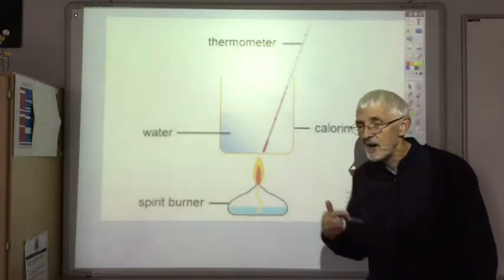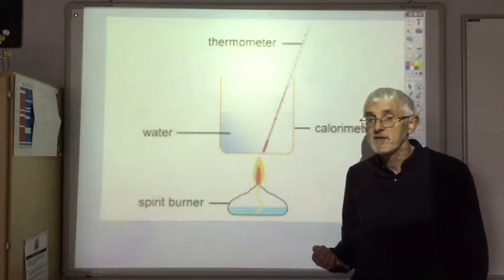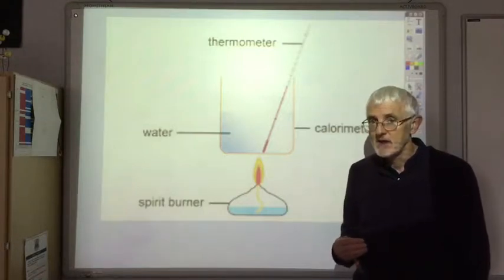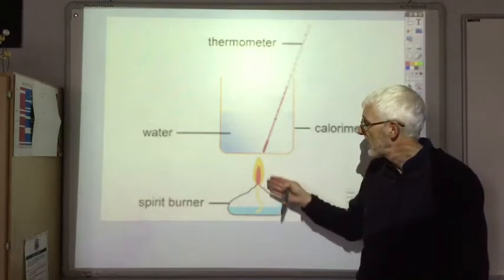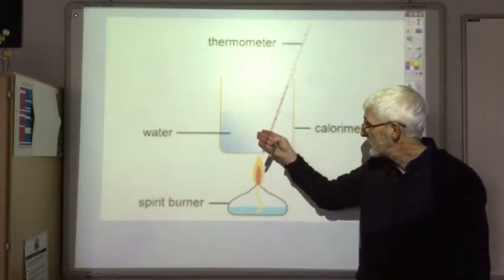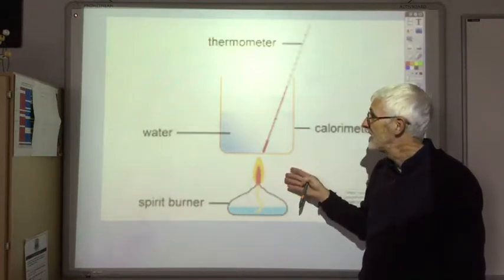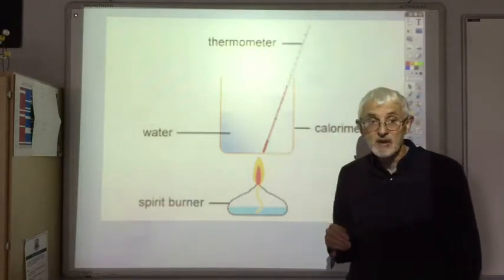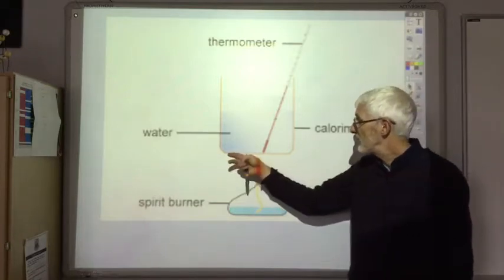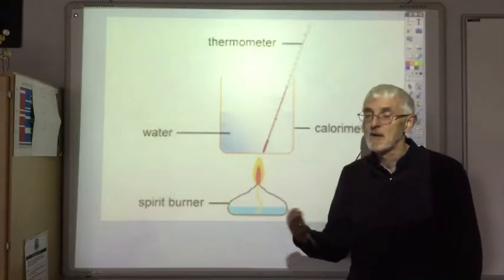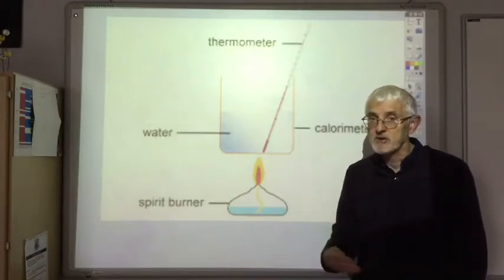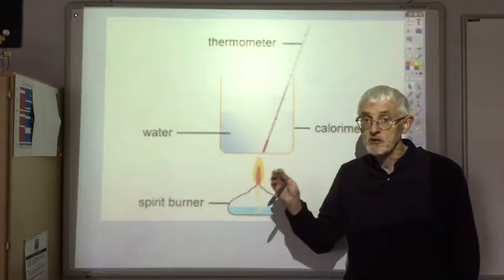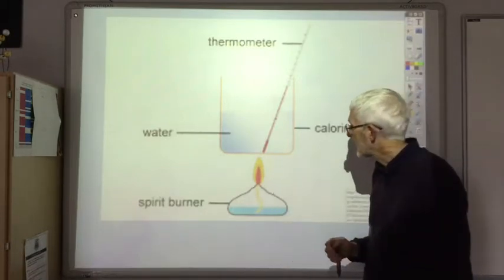Now if we compare our results to the literature values, we tend to find that the experimental results using this apparatus are lower than the actual values. That's because of two main problems. Firstly, with this apparatus, not all the heat produced by the fuel goes into the water. Some of it heats up the surrounding air, heats up the copper can which radiates heat to the environment, and also you get incomplete combustion. The bottom of the copper can gets very sooty; we don't have quite enough oxygen to have complete combustion. And if you don't have complete combustion, you don't get all the energy out of the fuel. So for those two reasons, experimentally determined values are usually less than theoretical values.